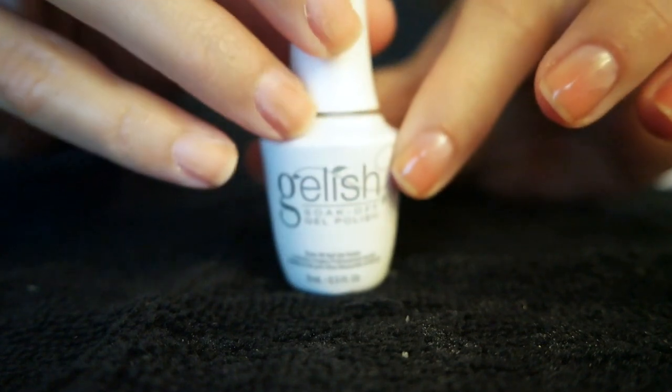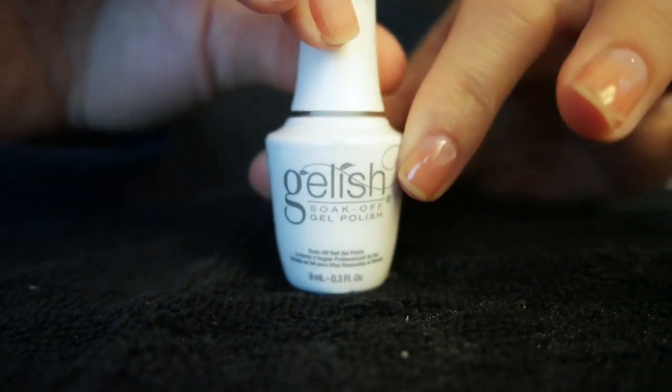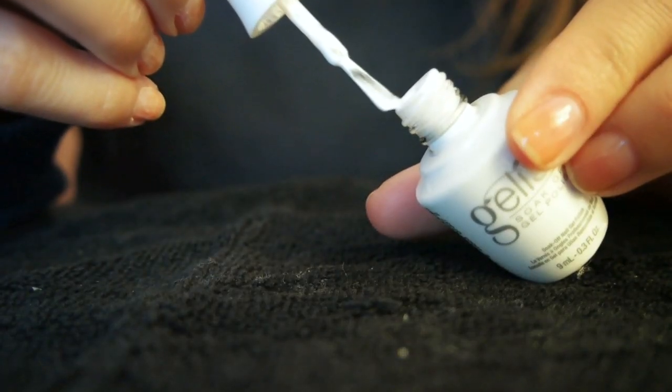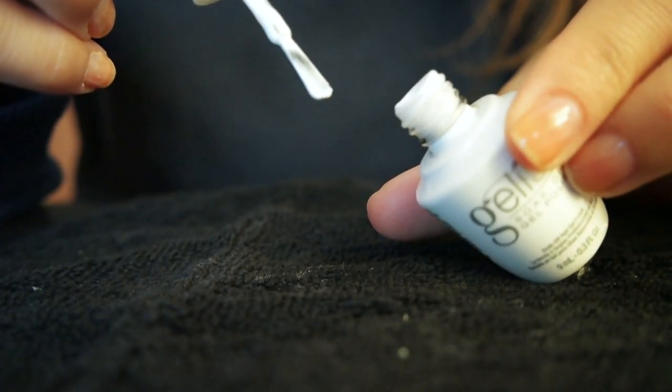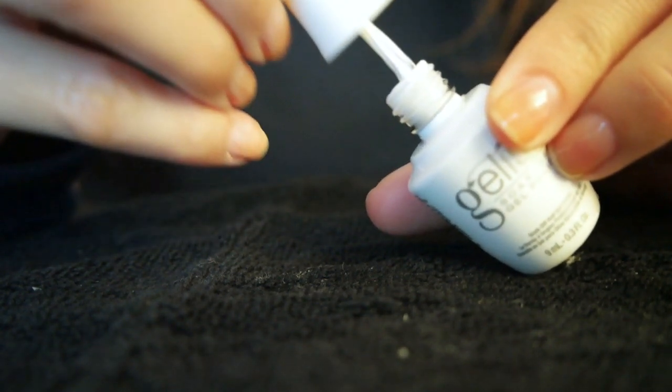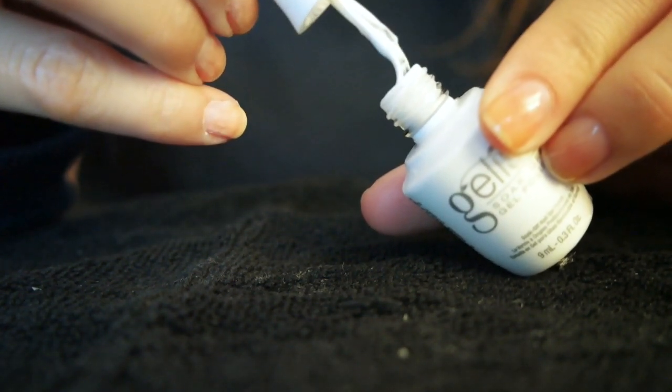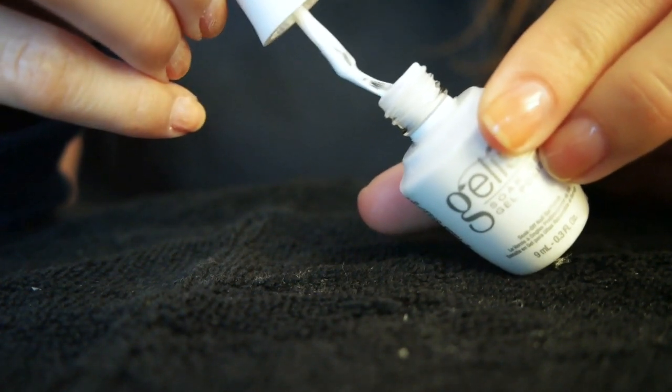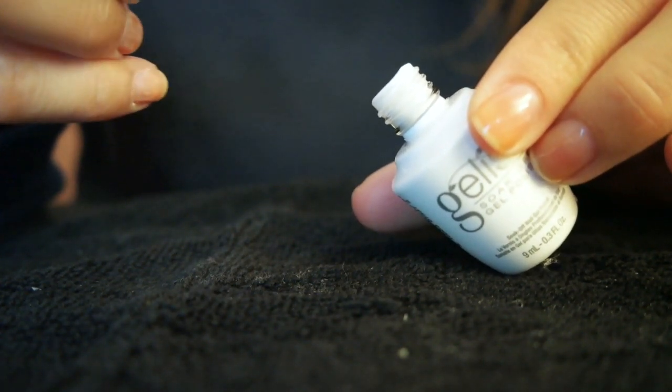Once that sticky layer has been removed, we're going to grab our color. We're going to be using Gelish's Chic White today to make our French manicure tip. This is probably the best white gel that I have come across—not just because it's Gelish, but it's very opaque, very thick, and very easy to work with. We're going to get a little bit of it on our brush. Now we want to make sure all the color is on one side of the bristles, and just a little bit of color.